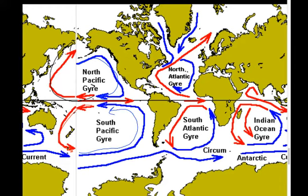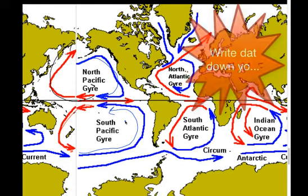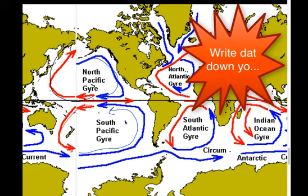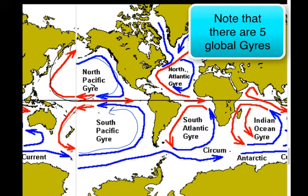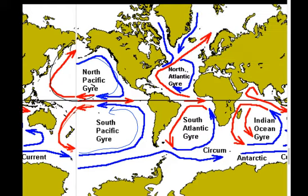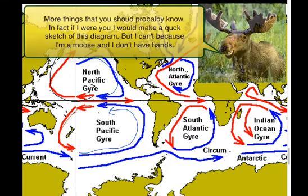These big individual circulation patterns are called gyres. A gyre is simply an individual circulation current. We have a South Pacific gyre, a North Pacific gyre, a North Atlantic gyre, a South Atlantic gyre, and an Indian Ocean gyre. When you look at any individual gyre, half of it will be made up of cold water and the other half will be made up of warm water.